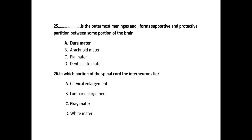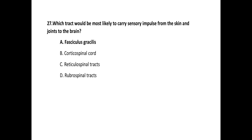Next: the blank is the outermost meninges and forms a supportive and protective partition between some portions of the brain — dura mater is the correct choice. Next question: in which portion of the spinal cord do the interneurons lie? The correct choice is gray matter. Next: which tract would be most likely to carry sensory impulses from the skin and joints to the brain? Fasciculus gracilis is the correct answer. Thank you.